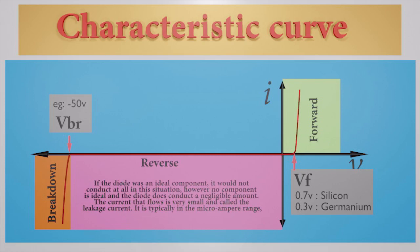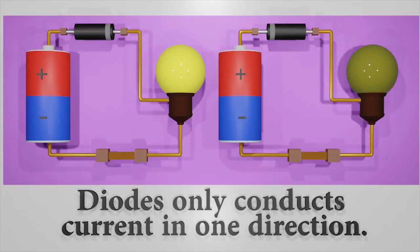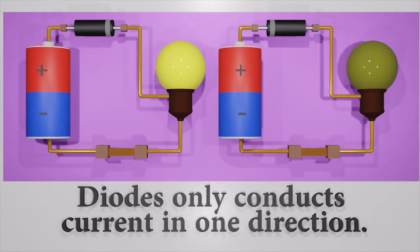In practical cases, the diode allows very low current to go through it at the reverse bias region. It is called leakage current. That is all about diodes. See you in the next video.